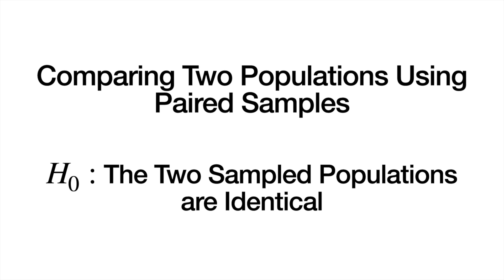You've already seen this in your first methods class with the paired t-test, a technique for comparing the means of two populations using dependent samples rather than independent samples. The dependence among samples needs to be accounted for in the analysis. We essentially transform the overall problem involving two populations down to a single population by taking differences between the observations in the paired samples, condensing down to a sample of differences, and making inferences about the mean of the population of differences.